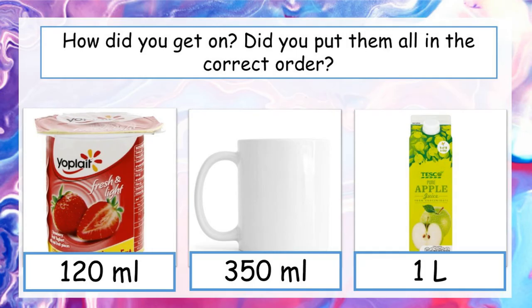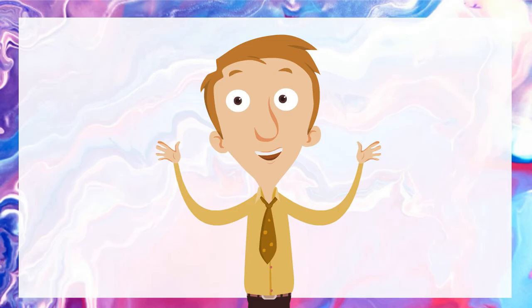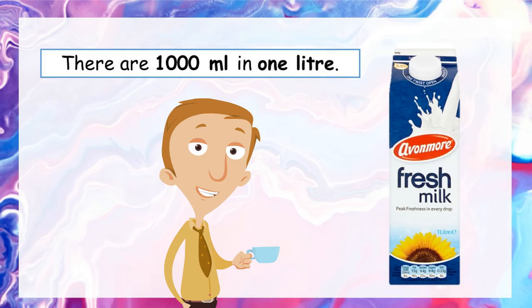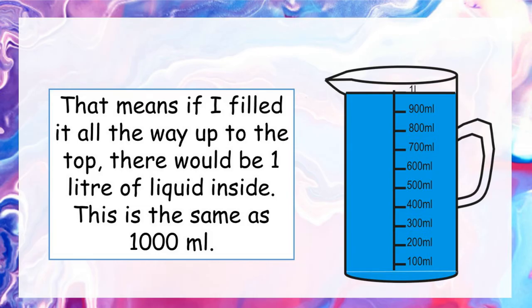One other piece of information that can help us make accurate estimates is the relationship fact we learned in the last lesson. Can you remember how many millilitres are in 1 litre? Pause the video and write down the answer. Hopefully you remembered there are 1,000 millilitres in 1 litre. This jug here has a capacity of 1 litre — the same as 1,000 millilitres — so if I fill it all the way to the top, there would be 1,000 millilitres inside.